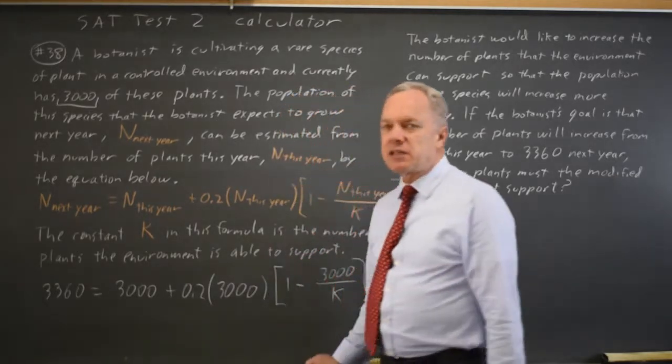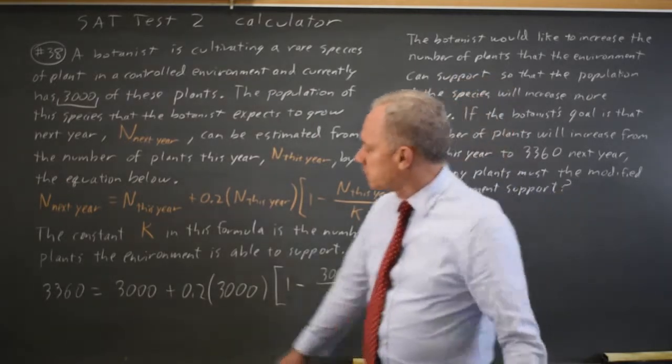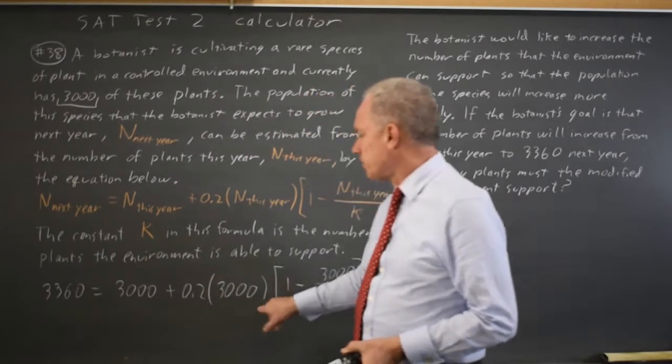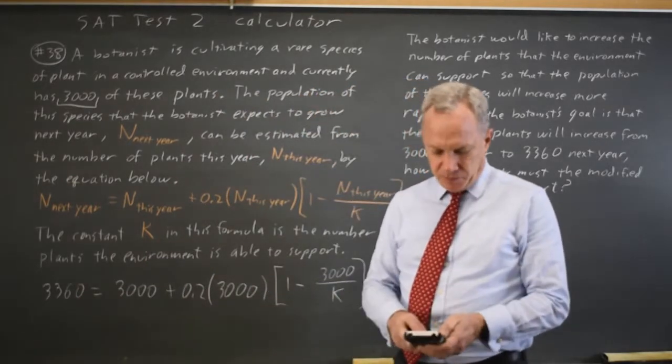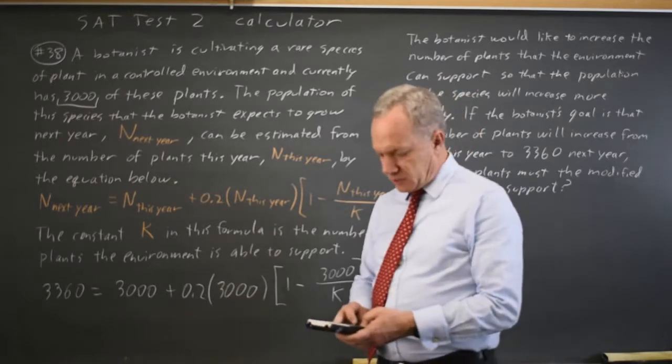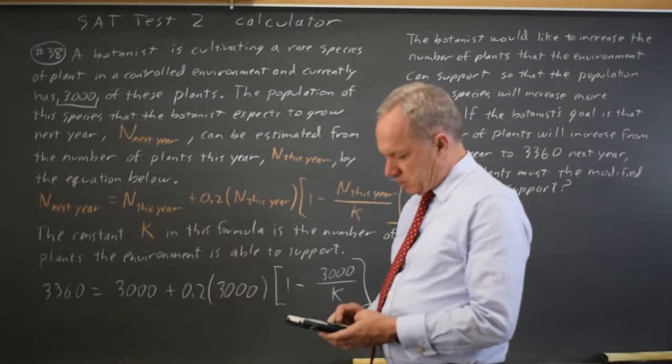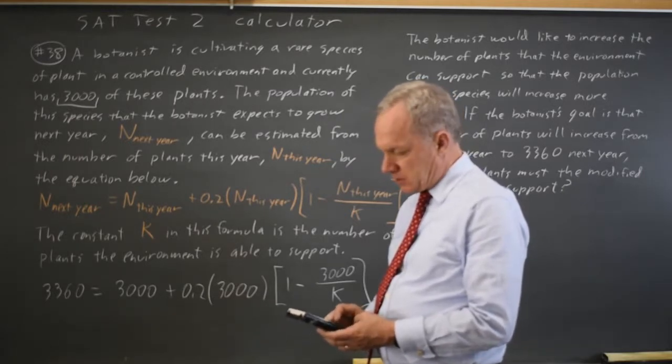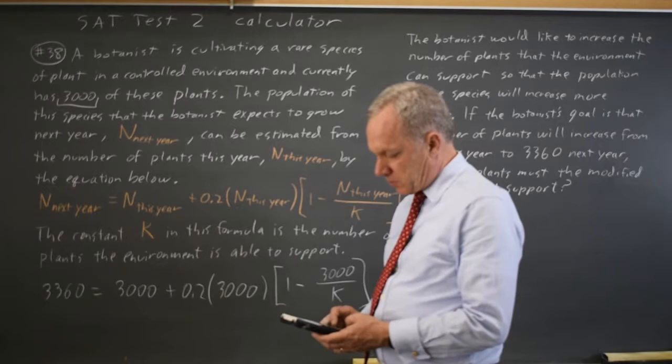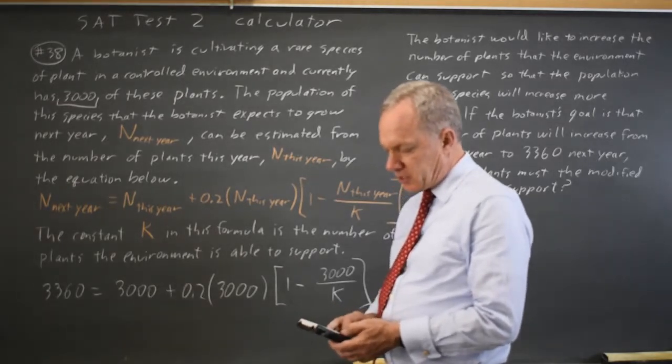I can solve this algebraically. I'd rather not though. If I put the left side in Y1 in my calculator, the right side in Y2, so that is 3,360 in Y1 and 3,000 plus 0.2 times 3,000 times 1 minus 3,000 over, I'm going to call it X in my calculator.